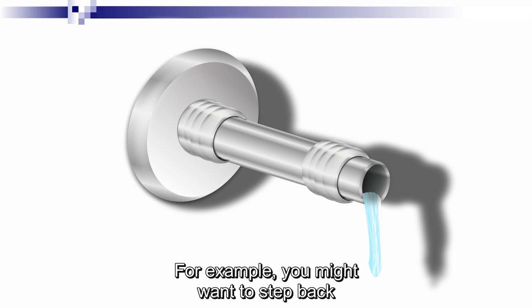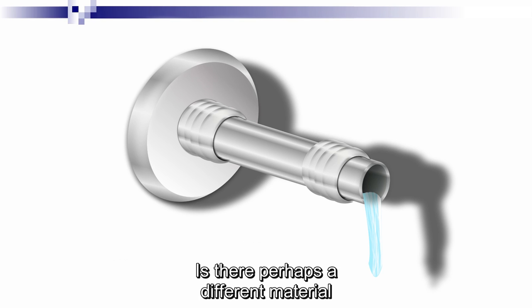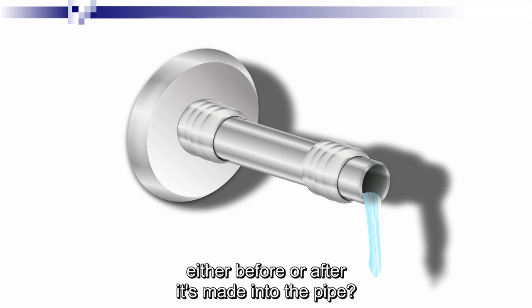For example, you might want to step back and say, well, are we sure we need the pipe to be coated? Is there perhaps a different material that would obviate the need for a coating, or is there a surface finish that could be applied to the material either before or after it's made into the pipe?